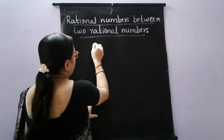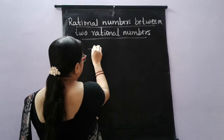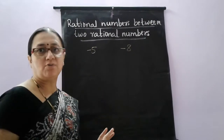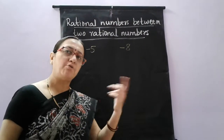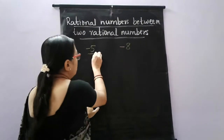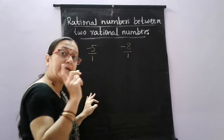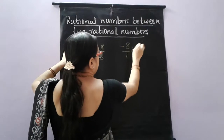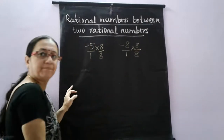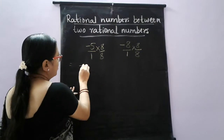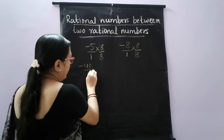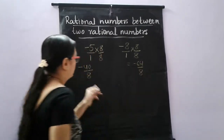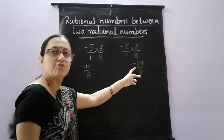One more example: I want to find 7 rational numbers between minus 5 and minus 8. So by what number do I have to multiply both numerators and denominators of these two? By 8 and 8. Multiply numerator by 8 and denominator by 8. This equals 5 × 8 = 40 by 8, and 8 × 8 = 64 by 8. So we have minus 40 by 8 to minus 64 by 8.